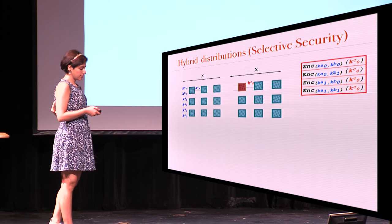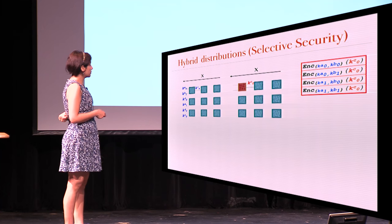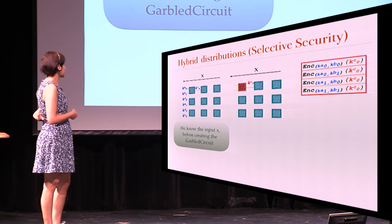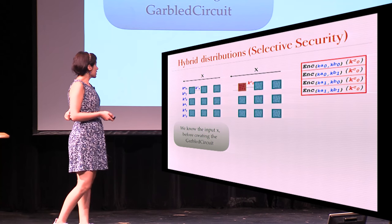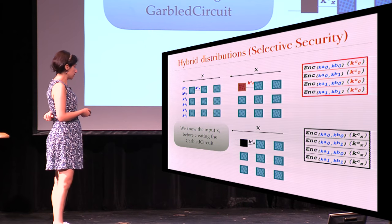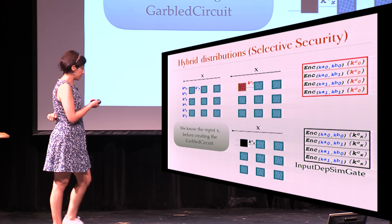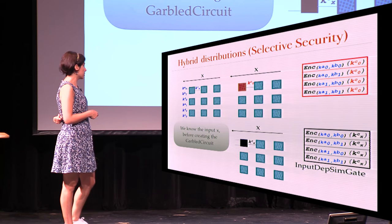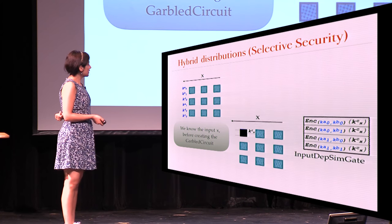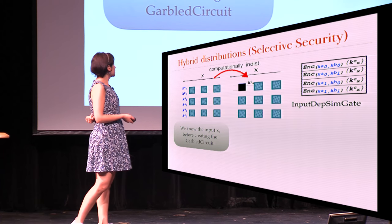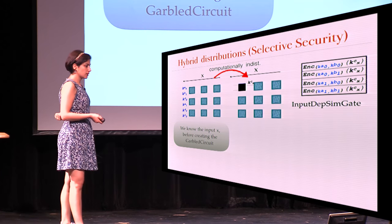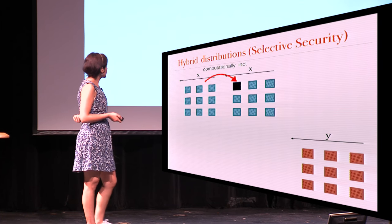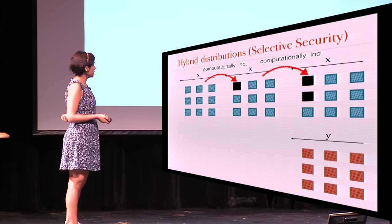We look at our simulated gate and see that the problem is that we are always encrypting C0. But we get the answer right there, because we know the input x. So I can define a new version of the simulated gate that depends on the input — aptly named the input-dependent simulated gate — and I put the right key that depends on the input x and the right output. Now I can say that these two are computationally indistinguishable. So we're going to replace the red ones with the black ones and keep doing that over and over.